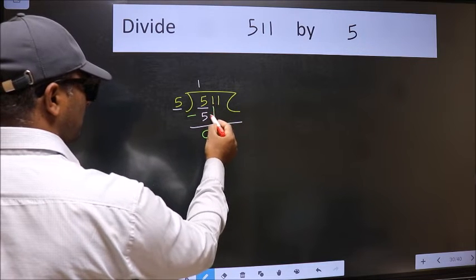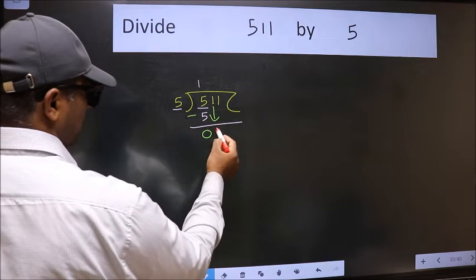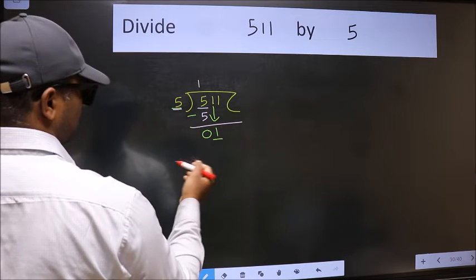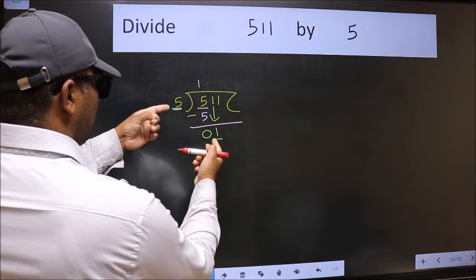After this, bring down the next number. So bring 1 down. Now here we have 1 and here 5. 1 is smaller than 5.